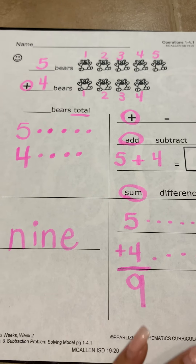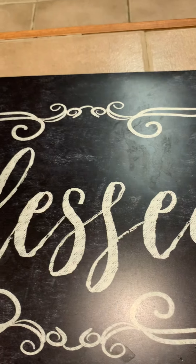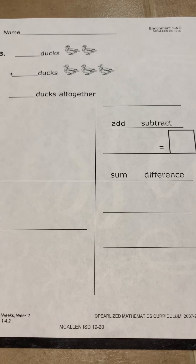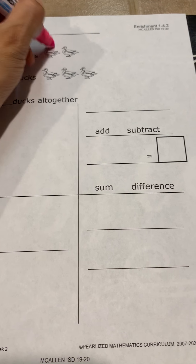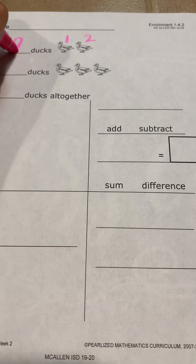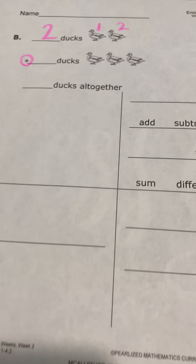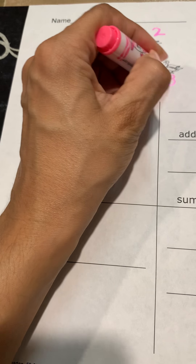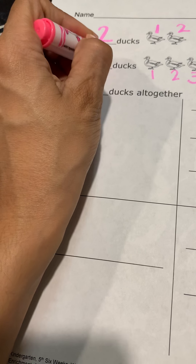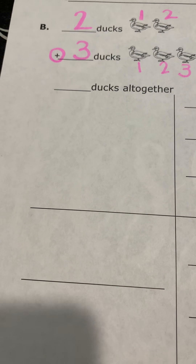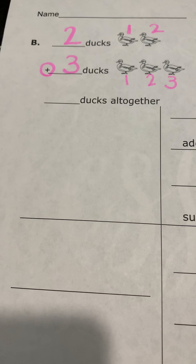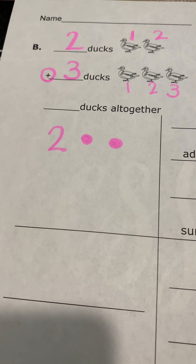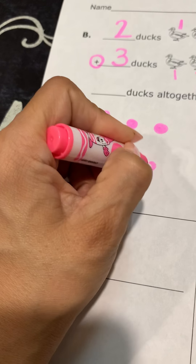Now we're going to do page 194 together. How many ducks do we have? Let's count: one, two — we write the number two. We have our addition sign, our plus sign, so we know we're going to add. How many more ducks do we have? One, two, three — our second addend is three. Now we analyze: two ducks, then three more come, and we write the number three with three dots.